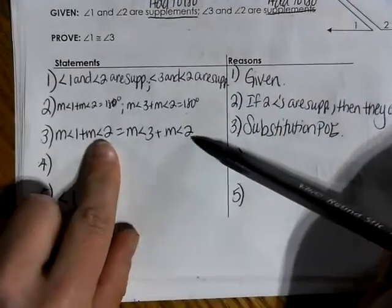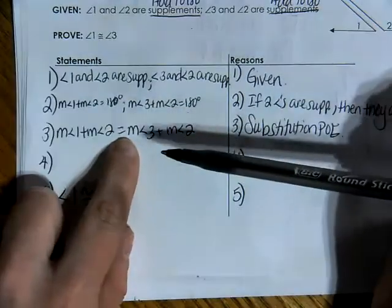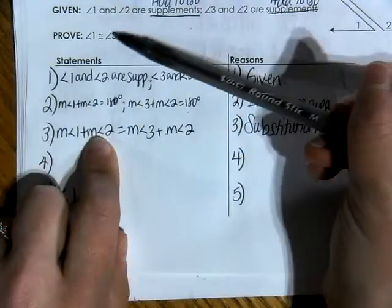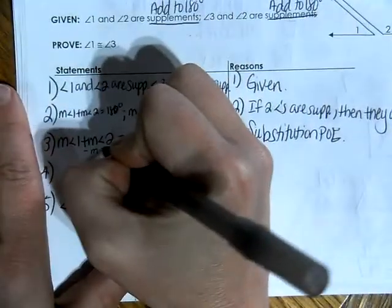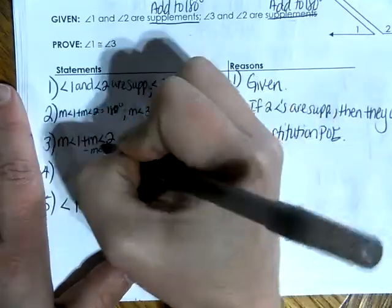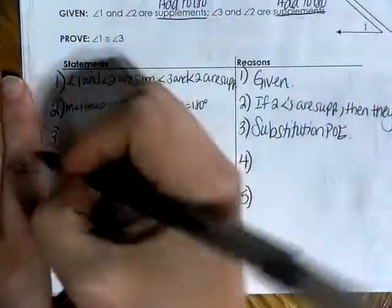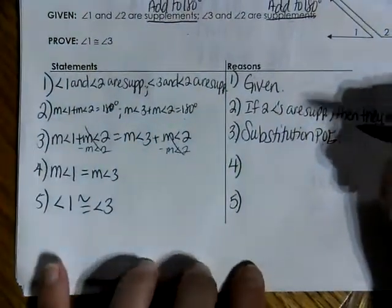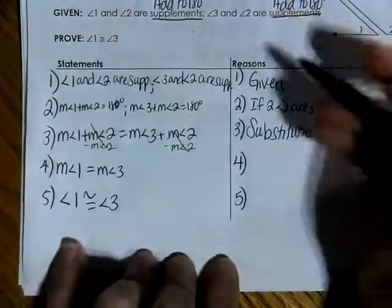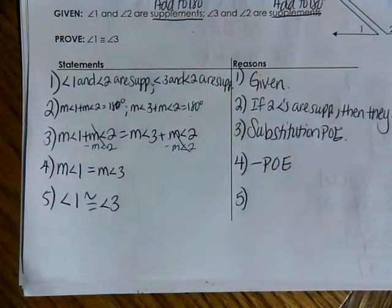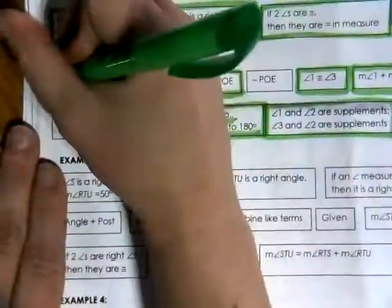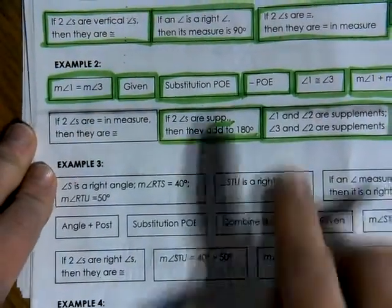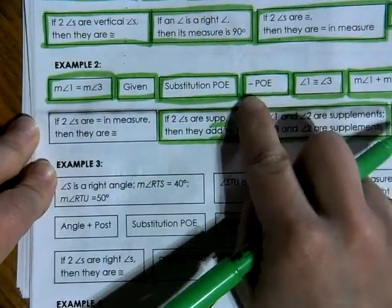What do you guys notice in this statement? We have measure of angle one plus the measure of angle two equals the measure of angle three plus the measure of angle two. So somehow I have to get rid of the measure of angle two so that I can just get one and three together. I'm leaning towards subtracting the measure of angle two on both sides, which would eliminate both measures of angle two, leaving us with the measure of angle one equal to the measure of angle three — the subtraction property of equality.